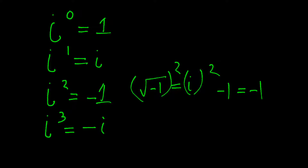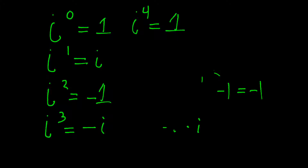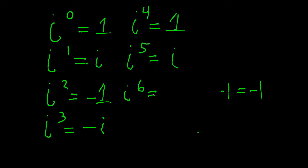i to the 4th power is positive 1, because that's the same thing as negative 1 times i squared, which is negative 1 times negative 1. If you notice, the pattern repeats: we start at 1, then i, then negative 1, then negative i, then back to positive 1. So i to the 5th is the same as i to the 1st — just i. i to the 6th is the same as i squared — negative 1. i to the 7th is negative i. This pattern continues on and on forever.